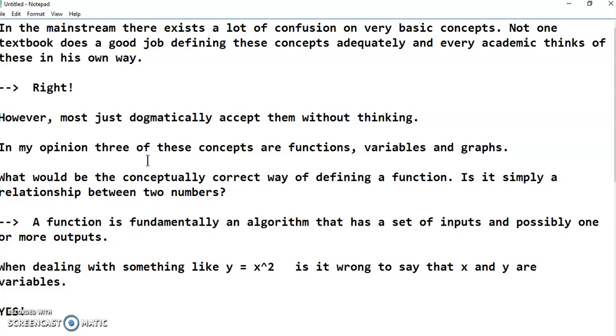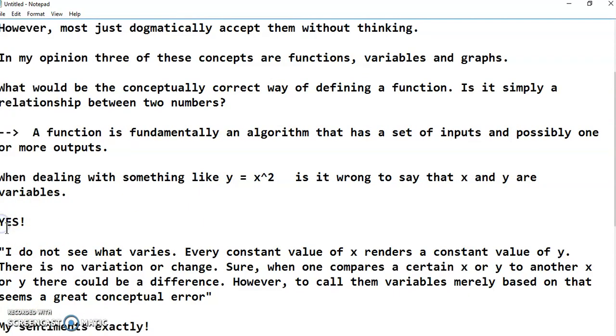When dealing with something like y equals x squared, is it wrong to say that x and y are variables? And my response is absolutely. It's wrong to say that y and x are variables because they haven't changed in past perpetuity and they're not going to change in the future either.